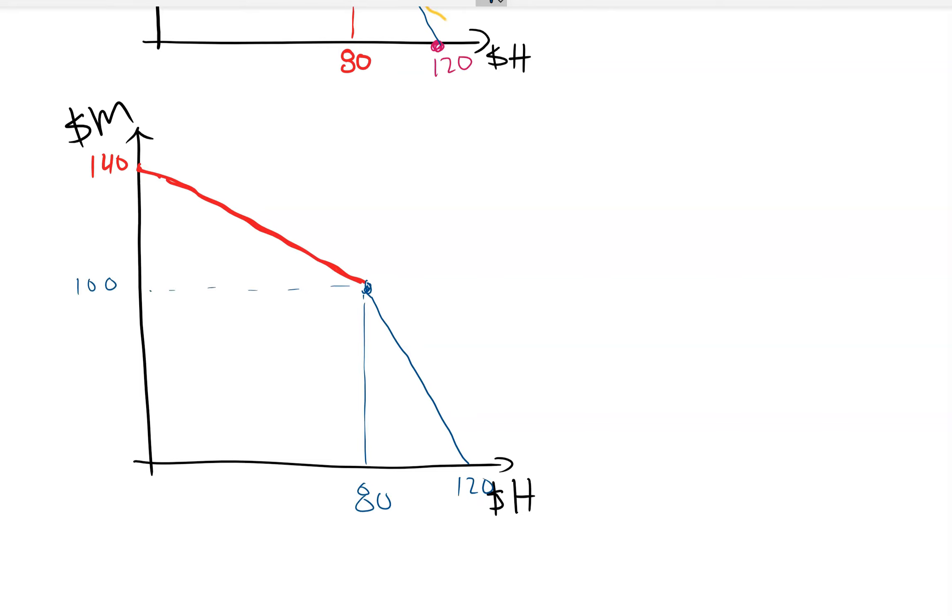That outside is called the joint PPF. So right now I'm not going to worry about what they like, so something else. So what we want to do here is we want to think about how much gain can they get from joining together.